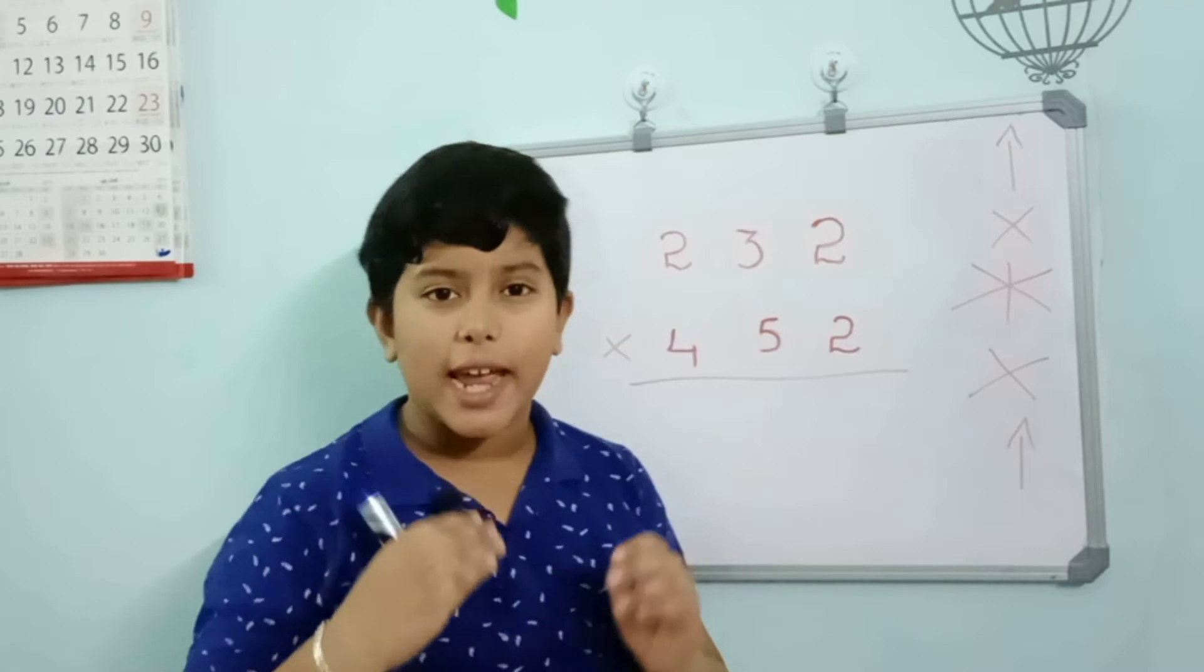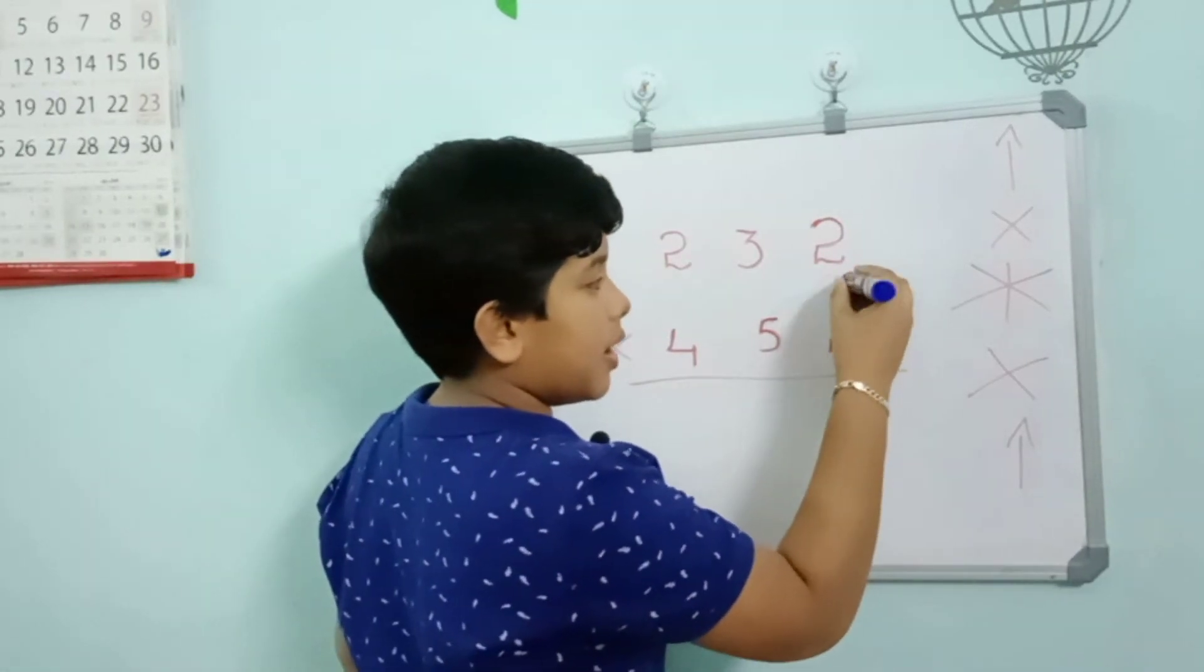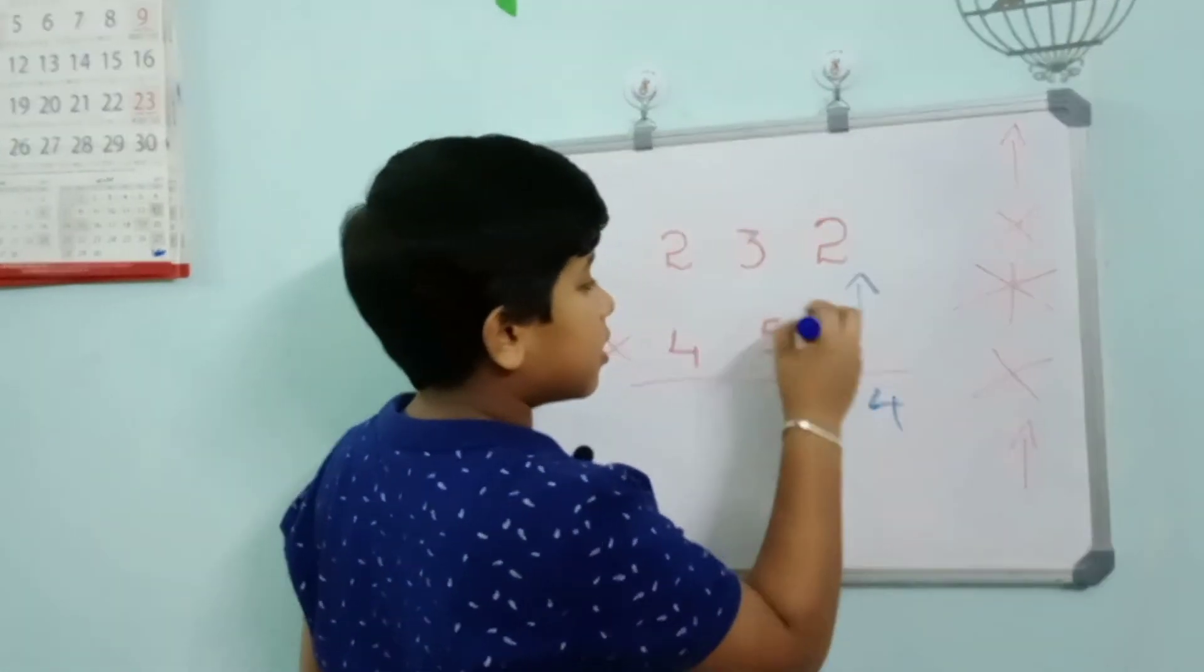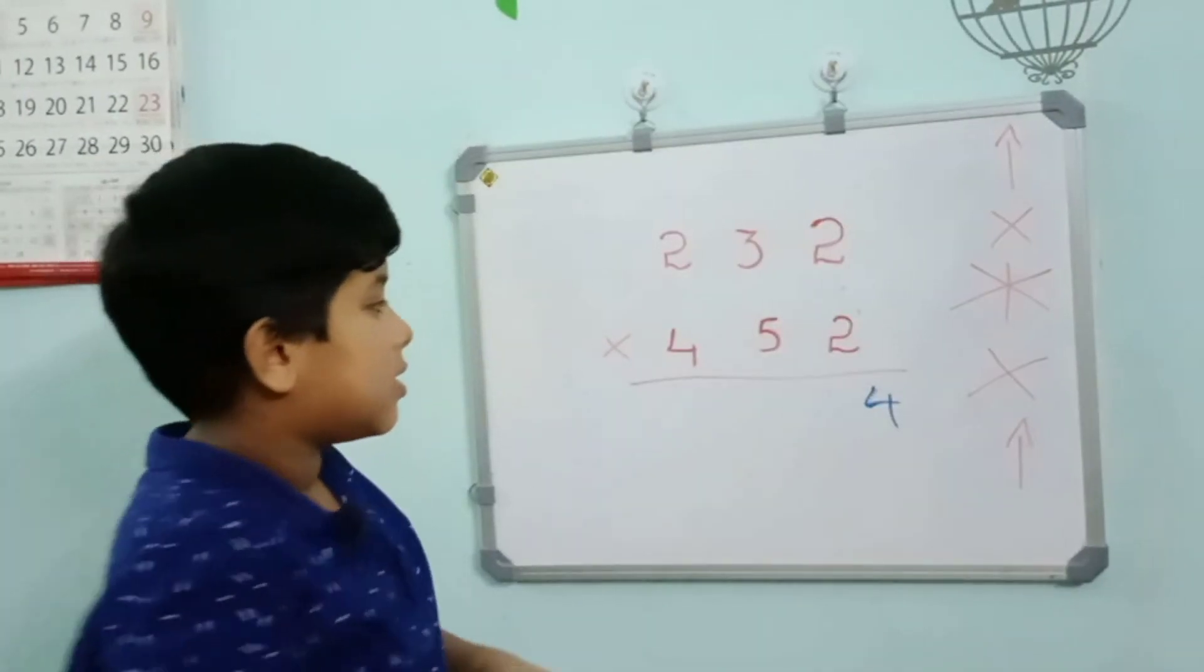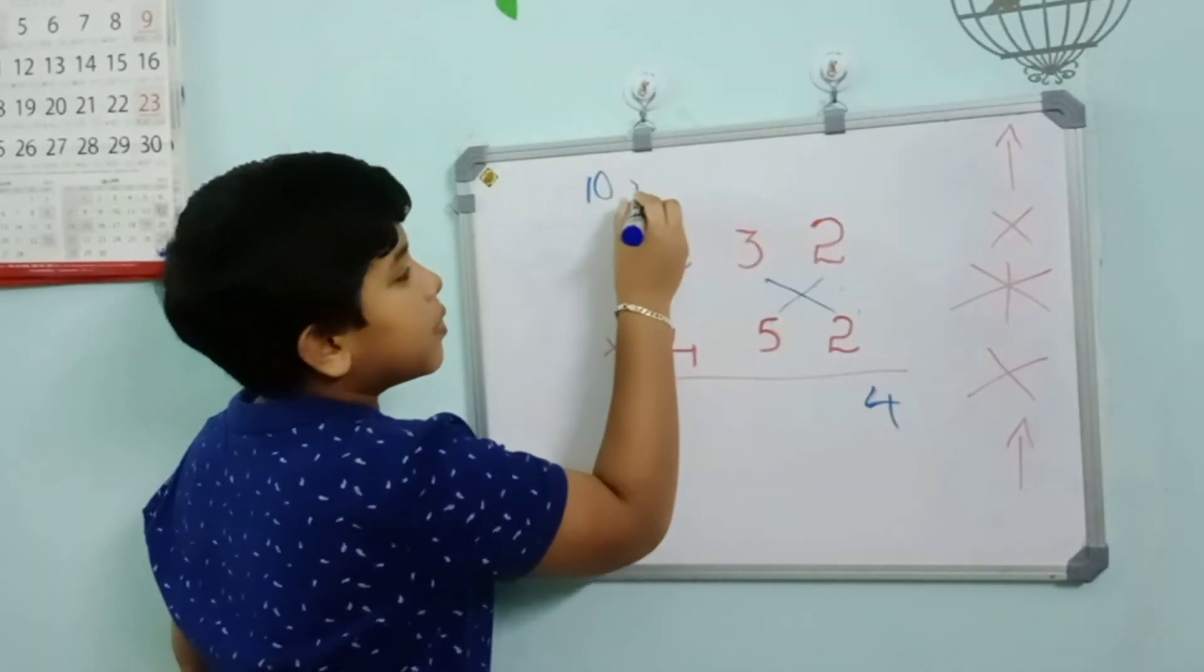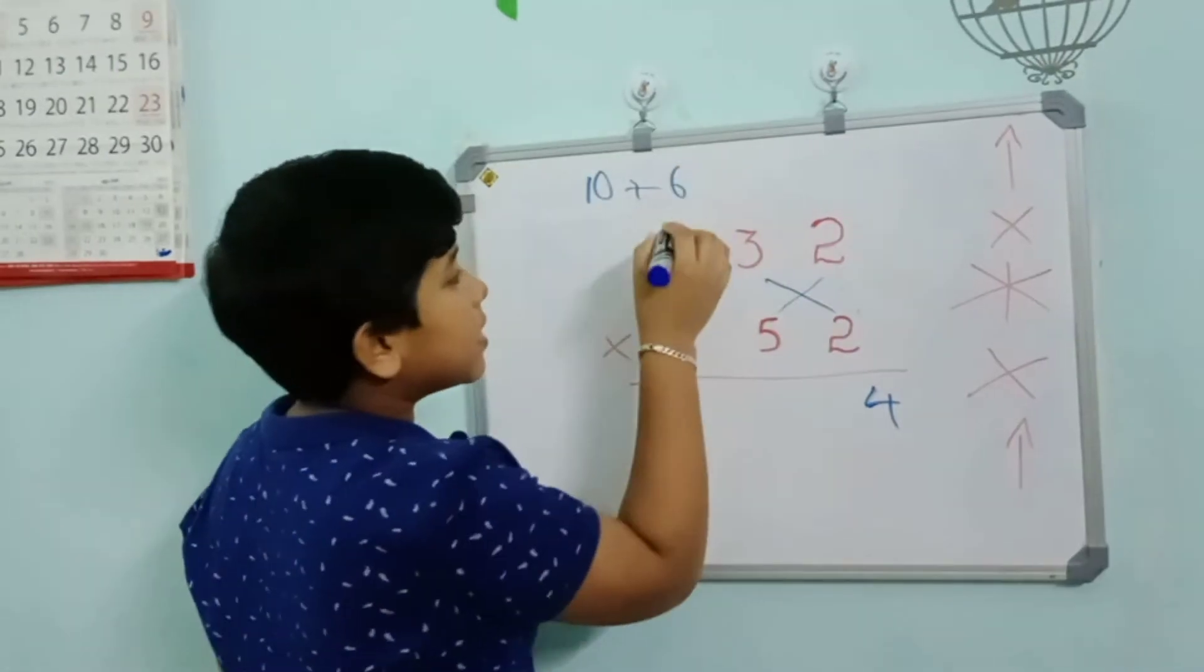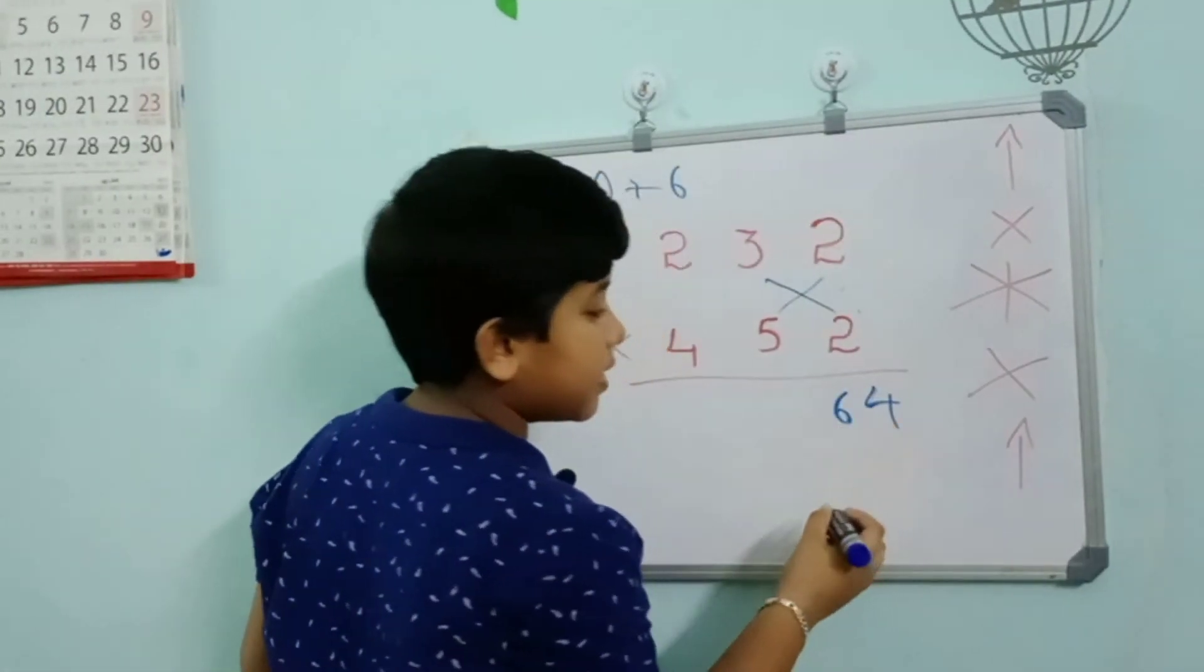With carry forward, first upward: 2 into 4 equals 8. Now crosswords: 5 into 2 equals 10, plus 3 into 2 equals 6, so 10 plus 6 equals 16. Write 6 here and 1 as a carry forward.